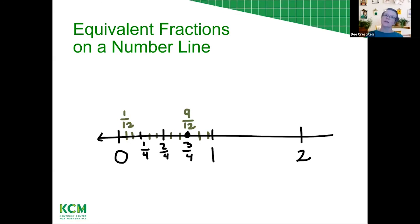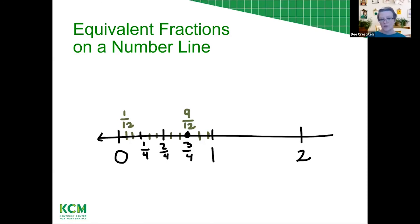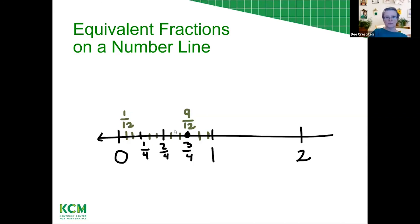Kids need lots of experience seeing fractions on number lines, building number lines, and putting partitions in themselves, so they can see that different names for equivalent fractions come from this kind of image — it's about the unit we start with, the subunits, and any further partitioning. Paper folding is also very good: fold into halves, then fourths, then twelfths and you can see it. Fraction bars work too. Any questions about this number line?